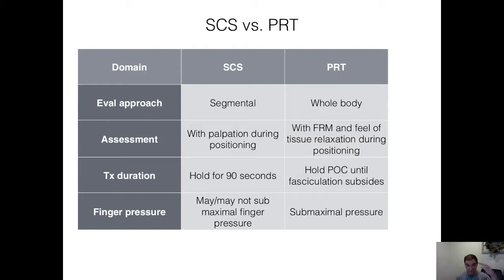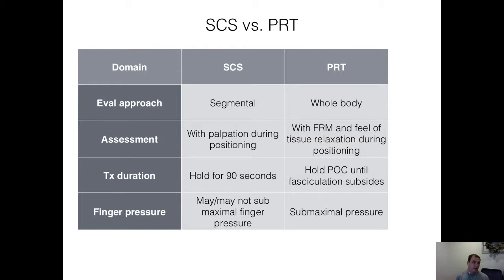Comparing strain counterstrain versus PRT — the big thing is to feel for the fasciculatory response, get them into the position of comfort, and use very light pressure once you've found the trigger or tender point. Essentially, you're shortening the tissue. For the calf example, plantar flex and then invert or evert depending on where the trigger point is. If it's on the lateral aspect of the leg, evert; if it's on the medial aspect, invert.